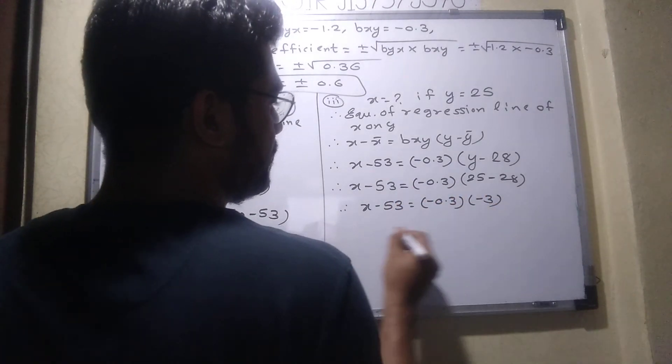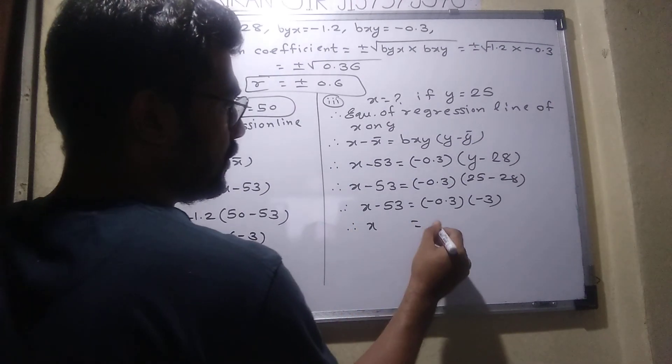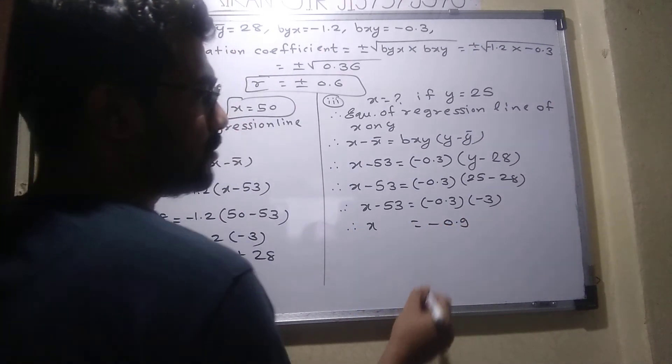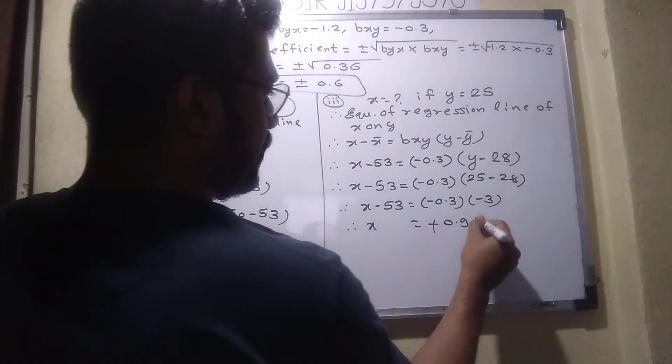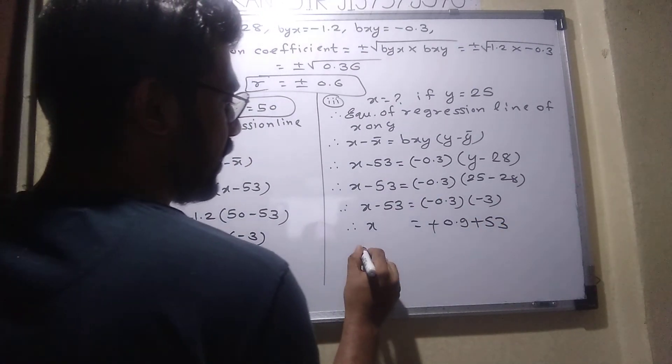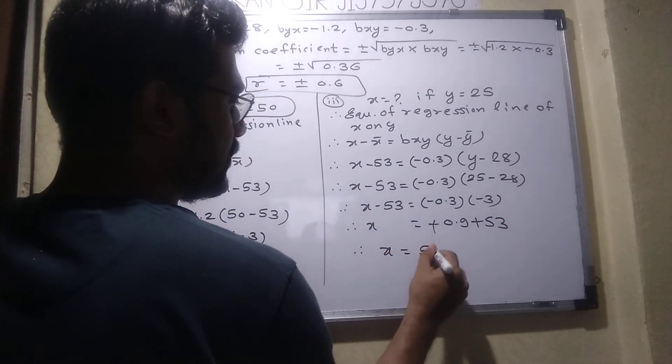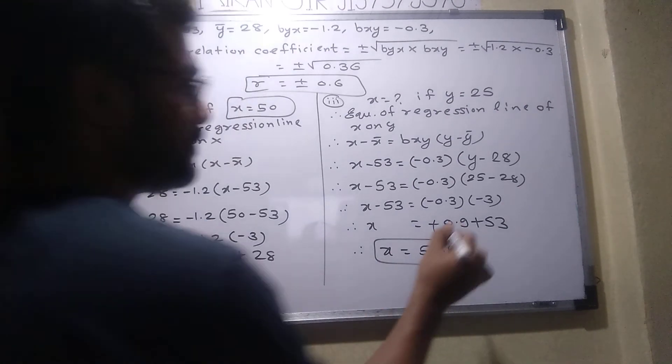Minus 3, minus 0.9, sorry plus 0.9 plus 53. What is the final answer? 53.9. Easy.